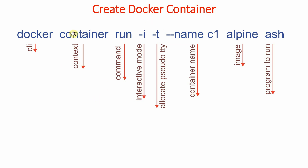Now let us see how to create containers. For creating a container we need to pull the images. The command for creating a container is: docker container run. We can specify interactive mode, attach a terminal with -t, name the container c1, and specify the image — in our case alpine, which is one of the smallest images available — and the program to run, which is the sh shell.